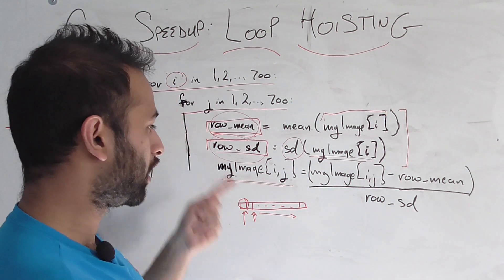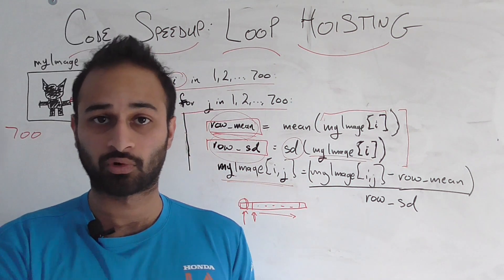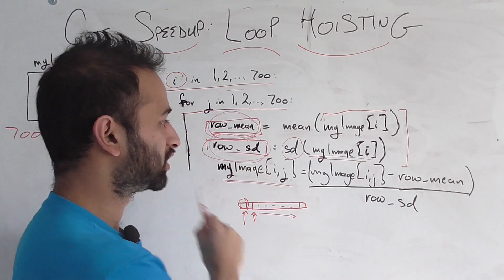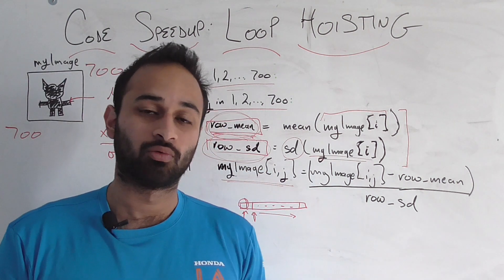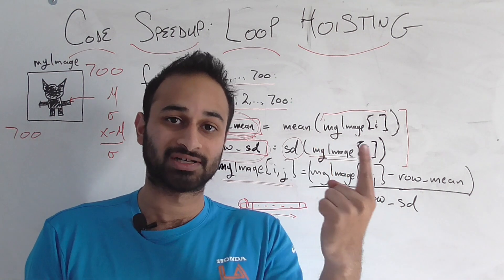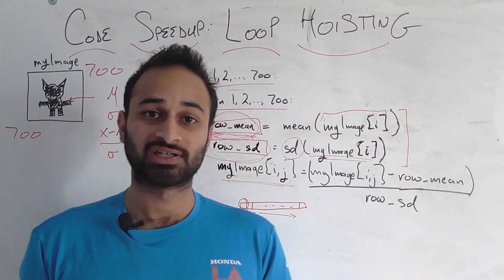So why is it that we're calculating these 700 times when all you need to know is the row? As soon as you know which i you're in, you can go ahead and compute these two guys and then use those two values for every single column that you're in. In fact, by doing it this way, not only are we wrong in our final result, we're also very inefficient. Because we're calculating row mean and row standard deviation 700 times. We're basically 700 times for each row we're in, even though we should just calculate it one time.